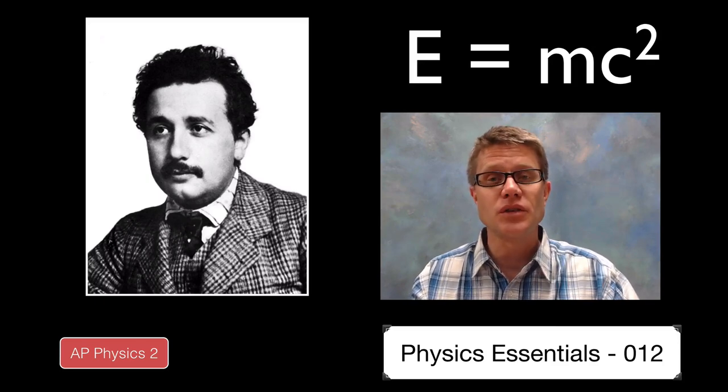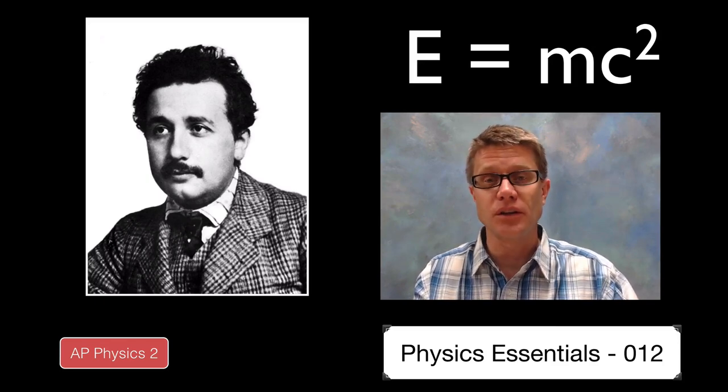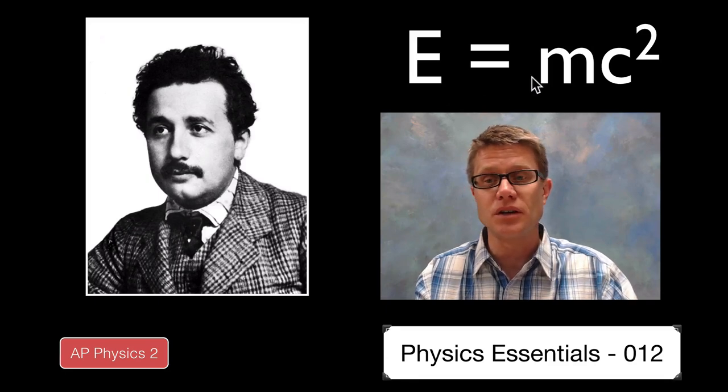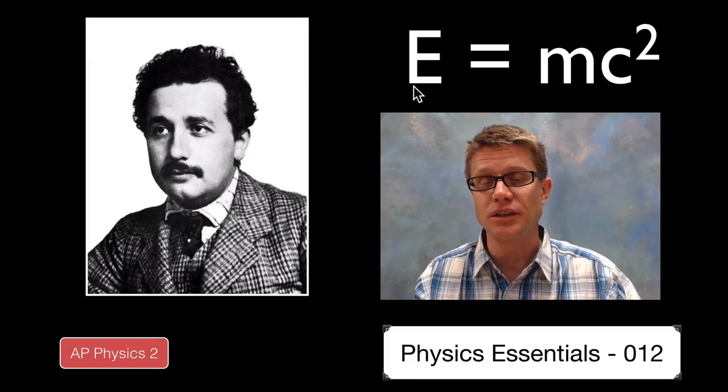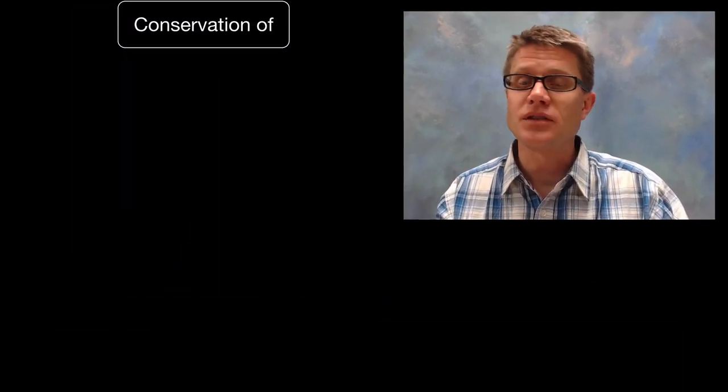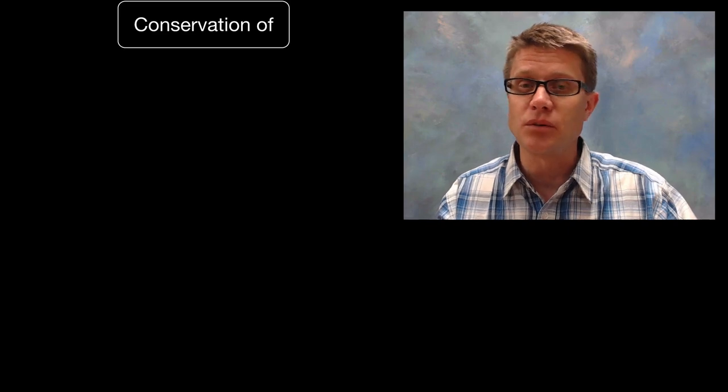And what it really shows is energy mass equivalence. In other words, that energy can be converted into mass and mass can be converted back into energy. And this equation tells us how much energy is going to be released in that process.